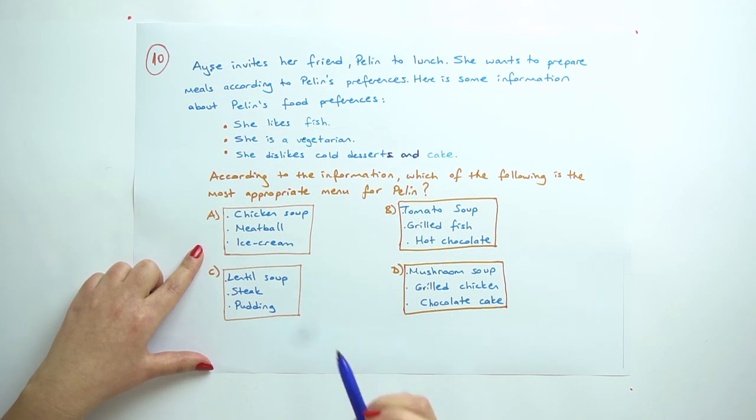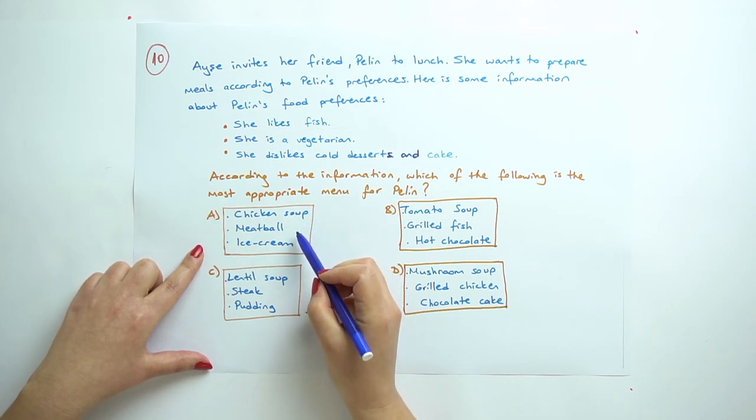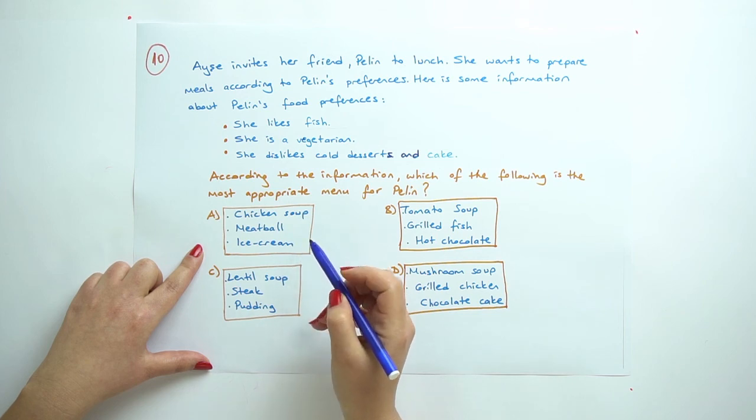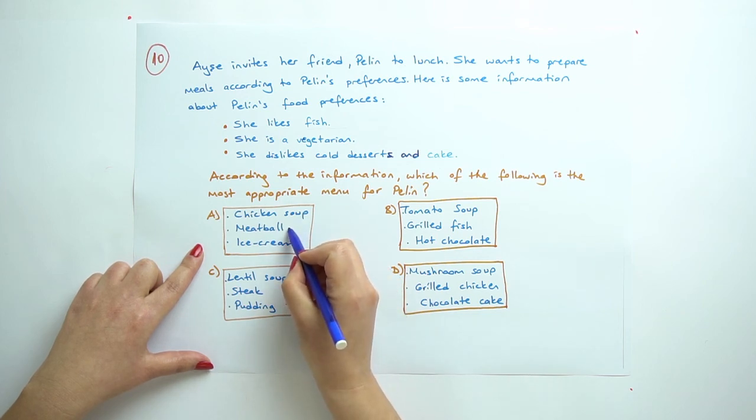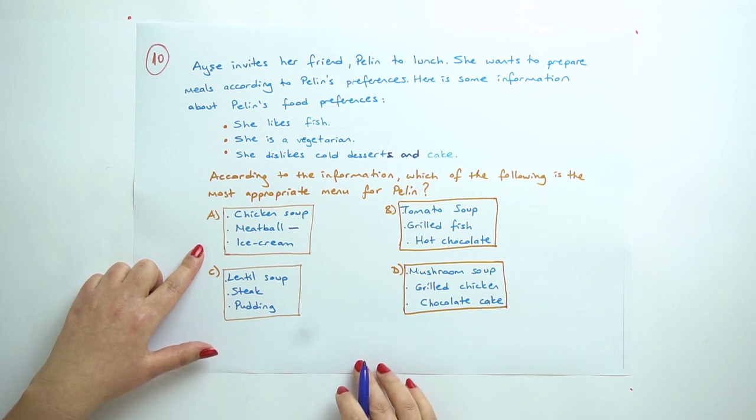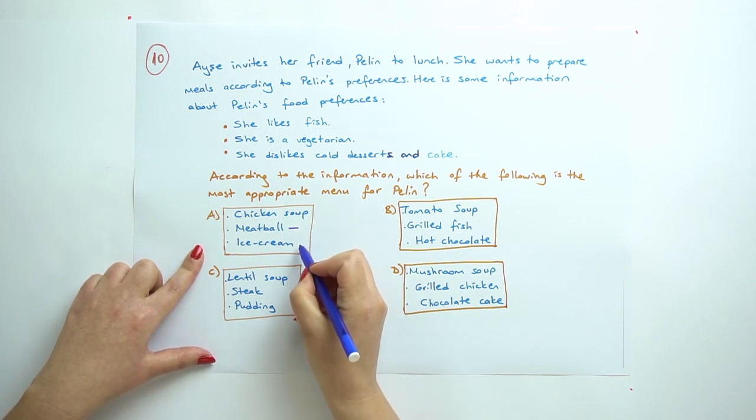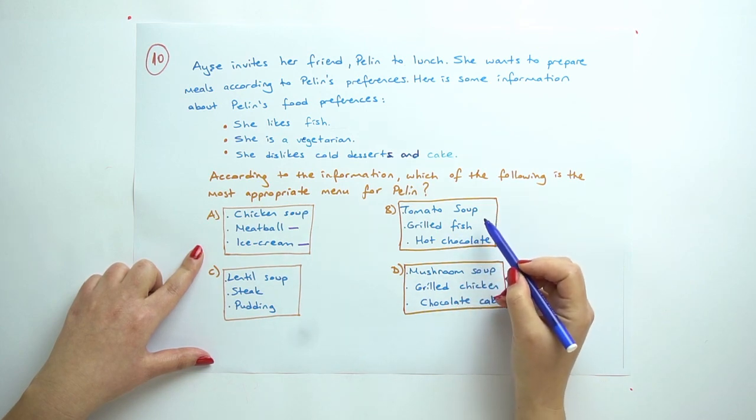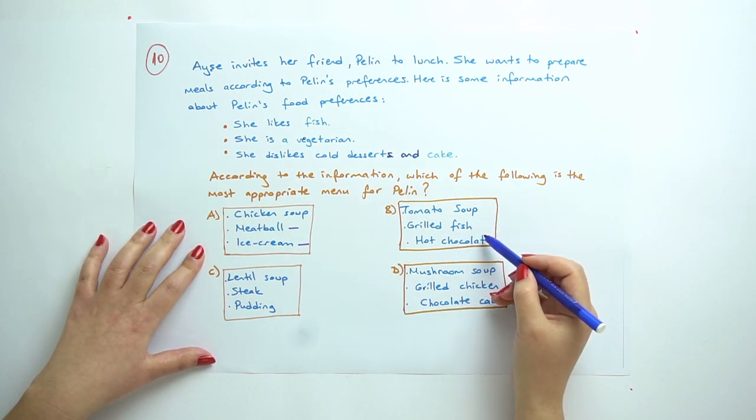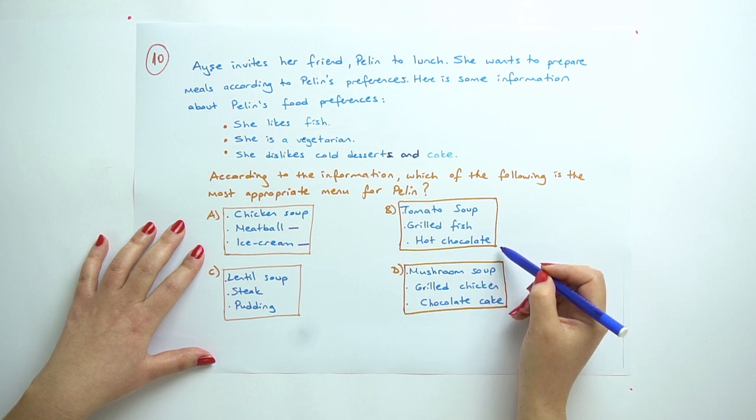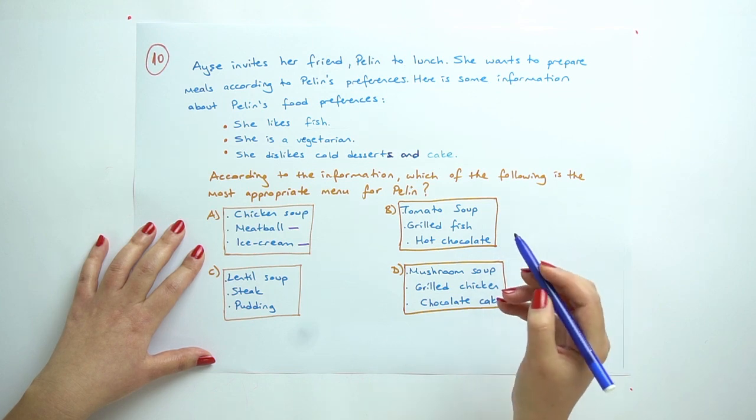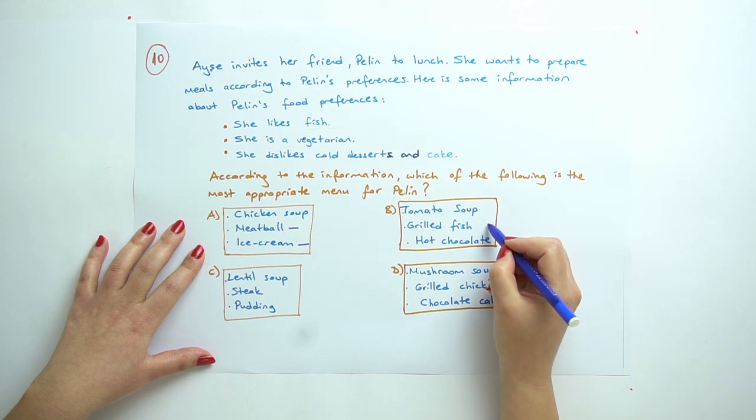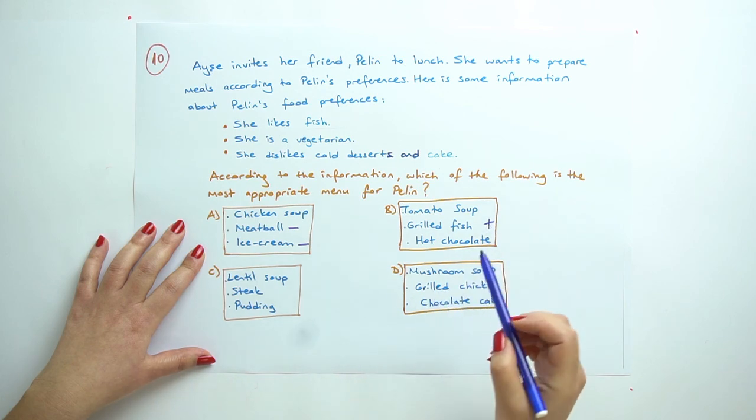Let's have a look at the options. A: chicken soup, meatball, ice cream. So she is a vegetarian, so she cannot eat meatballs. And also she dislikes cold desserts, we cannot say this one. B: tomato soup, grilled fish, and hot chocolate. So we can say this one because she likes fish.